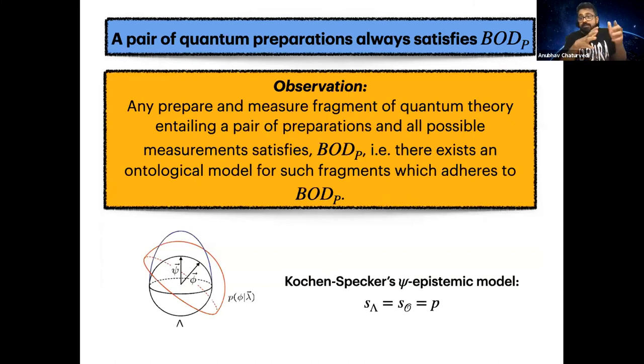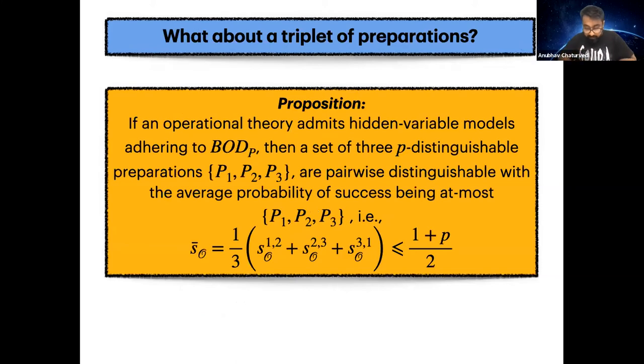First, if we just take a pair of preparations, then we show in our paper that you cannot get a divide. You always have a model that will have the same operational and ontological distinguishability. This model is a very old school model. It's the Kochen-Specker psi-epistemic model. So the existence of this model says that all fragments of pairs of preparations or prepare and measure fragments with pairs of preparations are completely classical in this particular formalism, according to this criteria.